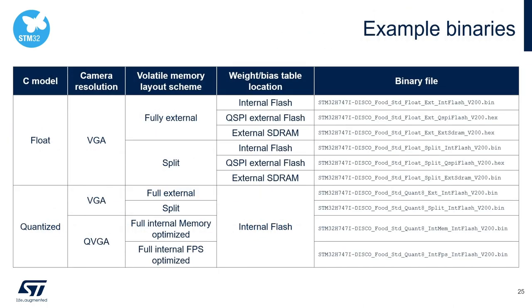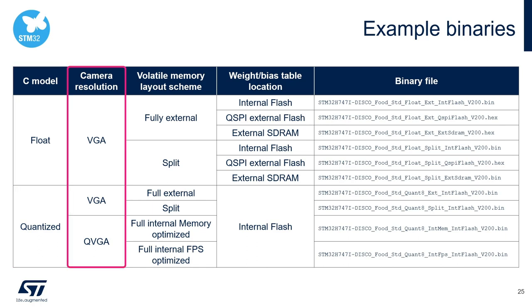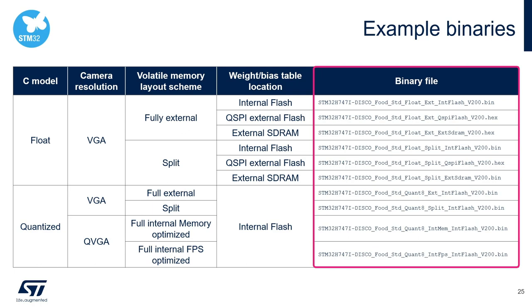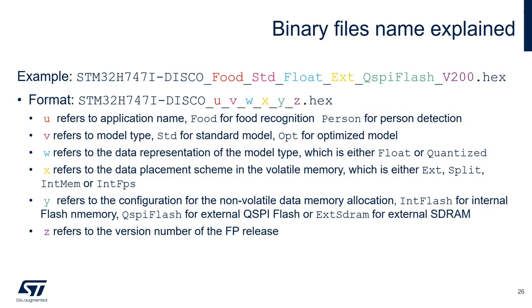Here is a list of the binaries included in the function pack. They cover all the combinations including float or quantized model, VGA or QVGA, different RAM schemes, and different flash schemes. You can find the desired combination by the file name, which I will explain in the next slide.